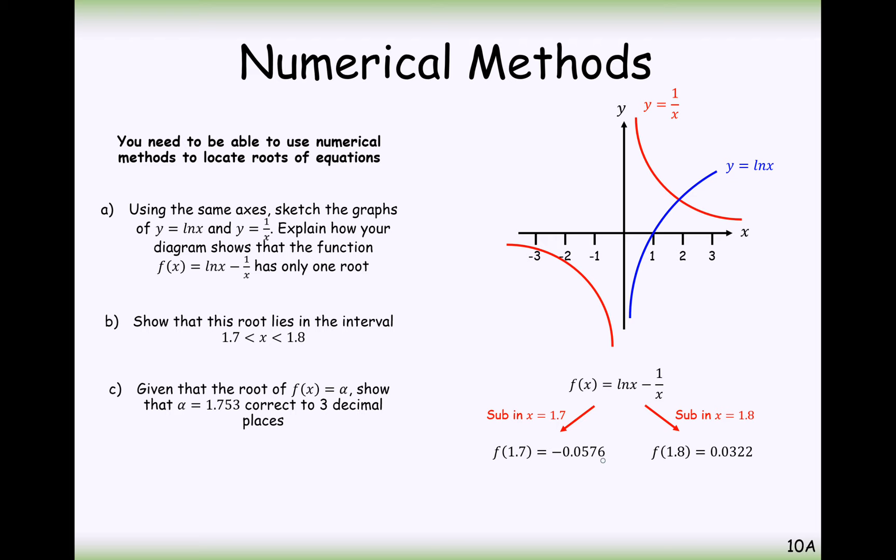So taking your function, substituting in 1.7 and substituting in 1.8, we clearly see we have a negative to positive sign change here. So therefore, we have a root in between 1.7 to 1.8. But we have to conclude that as well. We have to write a sentence saying that since the function is continuous across 1.7 to 1.8, there is a sign change and the roots must be within this interval. Part C is typically a question where students accidentally go wrong. They're not quite sure what to do at this stage here.